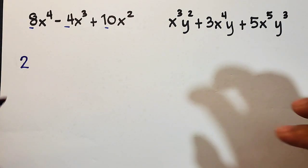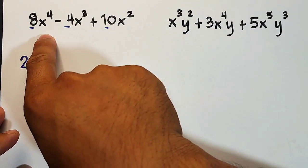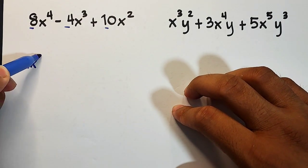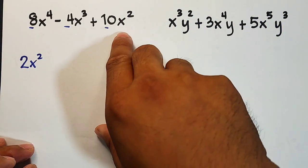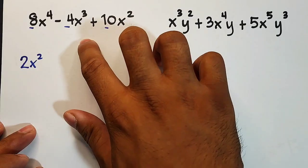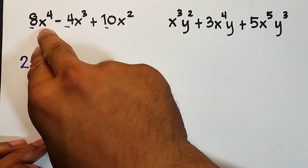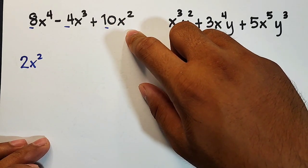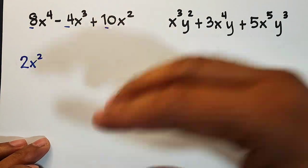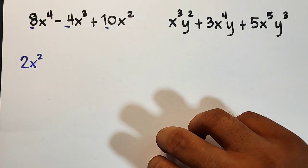That's the greatest common factor for the numbers. For the variables, observe: you have x variables in all terms but with different powers - x⁴, x³, x². I'll choose x² as the factor. Why? You can't use x⁴ because x³ and x² don't contain x⁴. You can't use x³ either, because although x⁴ contains x³, x² doesn't. But if we choose x², it's contained in both x⁴ and x³. Basically, for variables, choose the common variable with the lowest exponent. This is our common monomial factor.